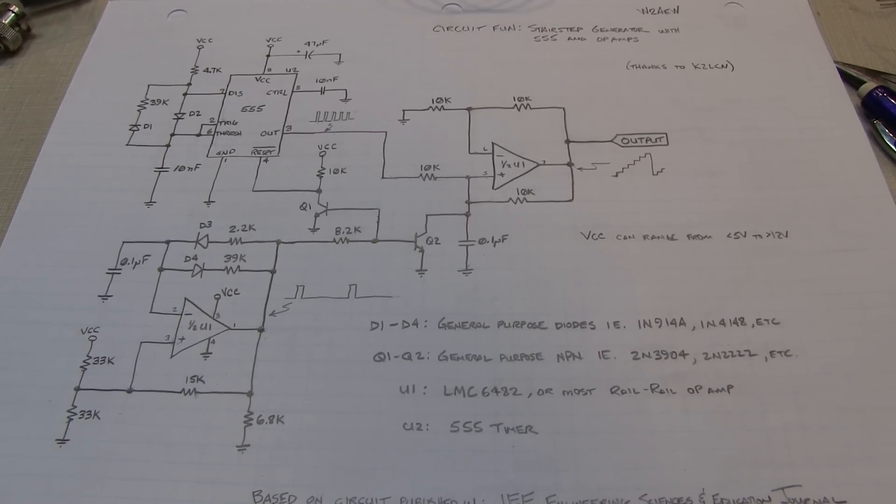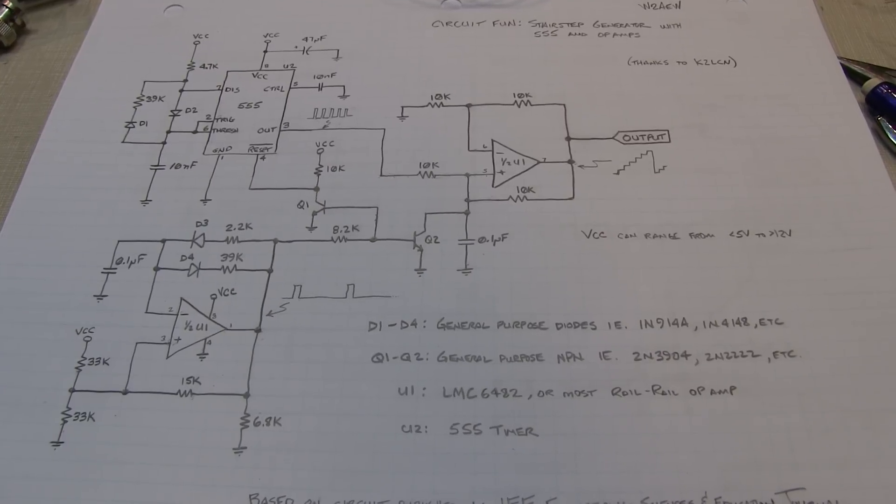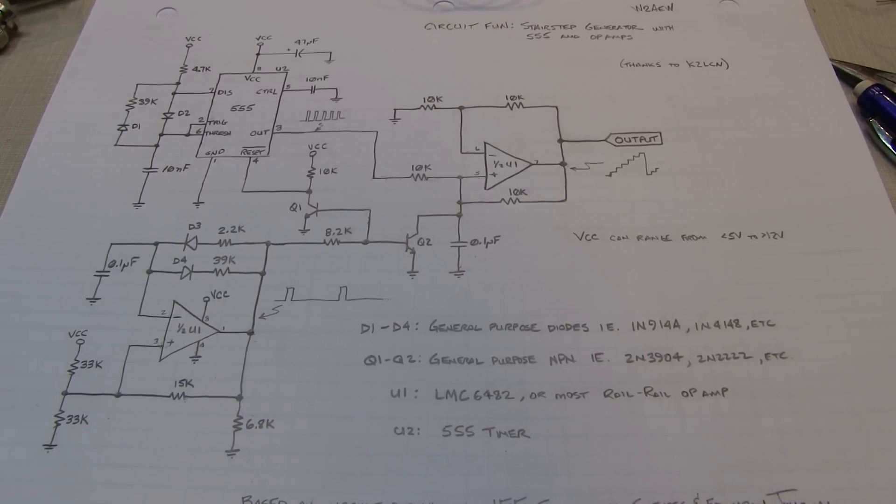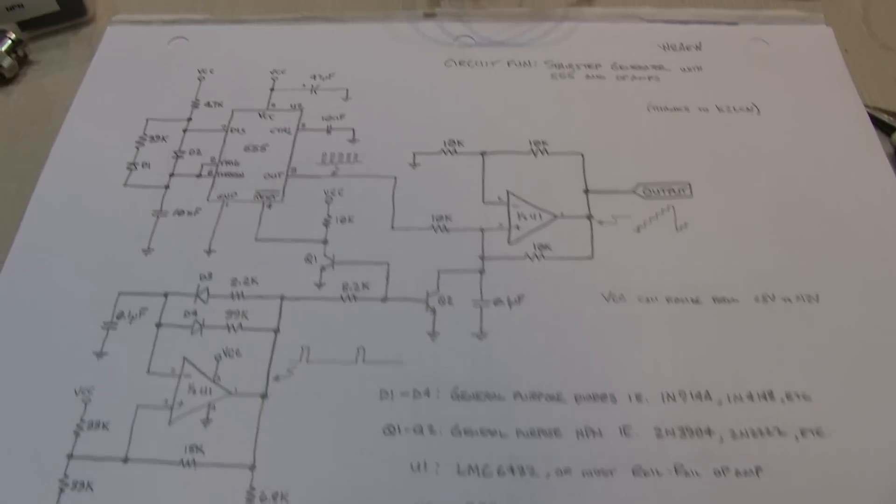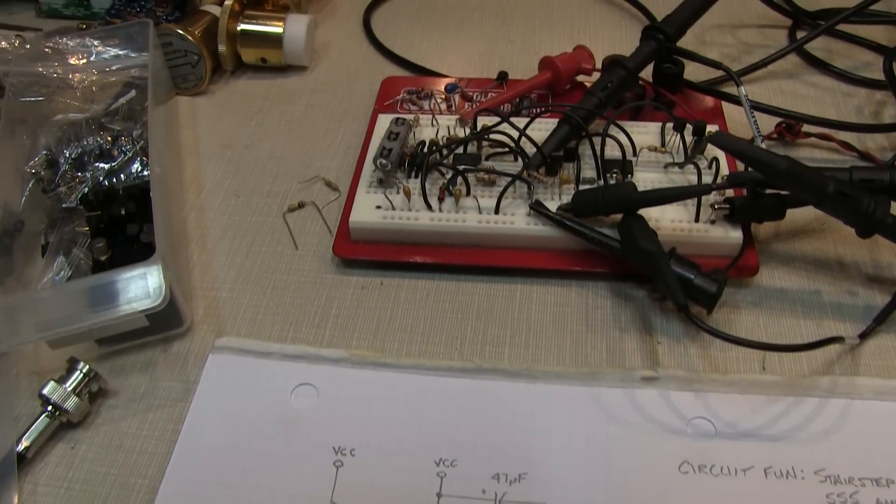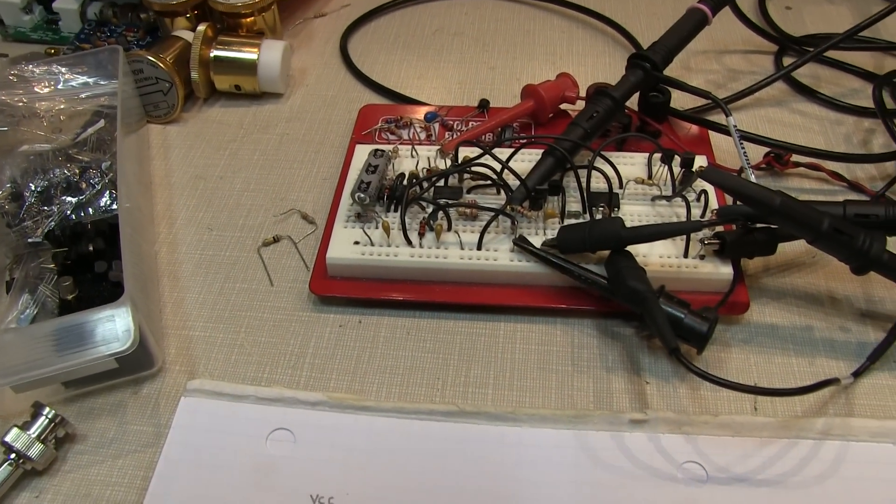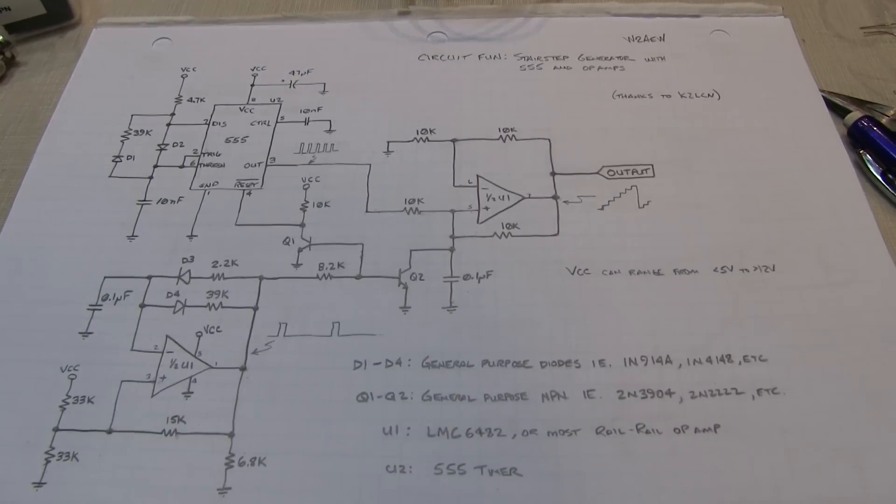In my previous video, we took a look at this unique stair-step generator that used a 555 timer and a pair of op-amps to create a stair-step voltage waveform. And one of the more common questions I got is, what would you use this for?